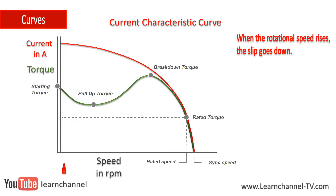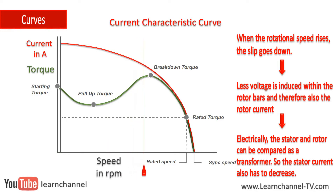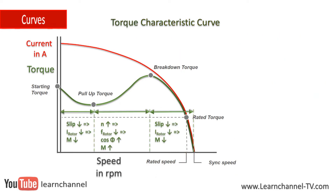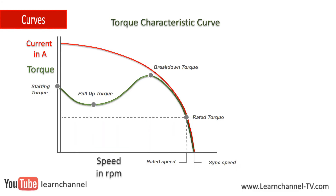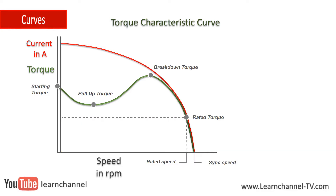As the rotational speed increases, the RMF cuts the rotor at a lower frequency and the motor current decreases inevitably. Several effects determine the course of this characteristic curve. Once the three-phase asynchronous motor has reached its nominal speed, it can safely maintain its nominal speed even with increasing load, because the torque curve is steep at the nominal point.